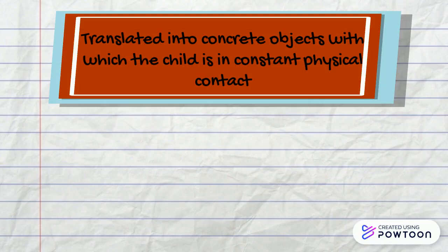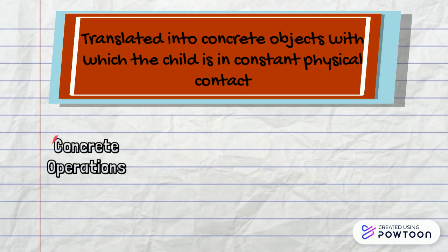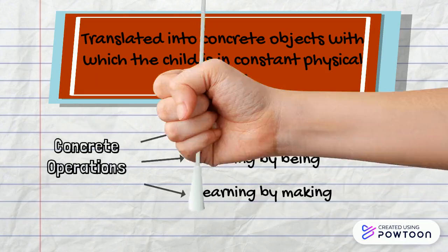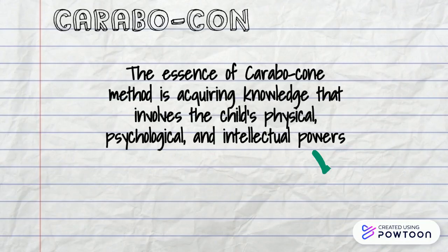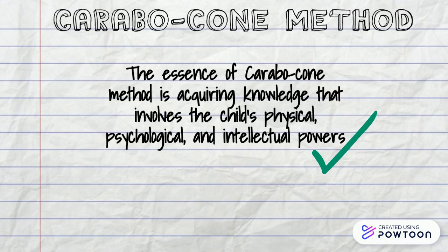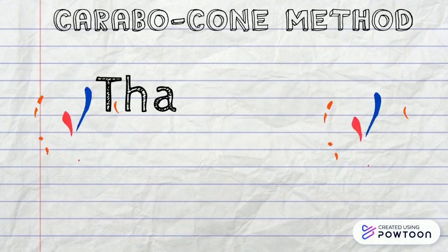In the Carabocone method, all abstract ideas are translated into concrete objects with which the child is in constant physical contact. The entire program consists of concrete operations. In conclusion, the essence of the Carabocone method is acquiring knowledge that involves the child's physical, psychological, and intellectual powers and mirrors the original approach to learning through the early developmental stages. That's all from us. Thank you!